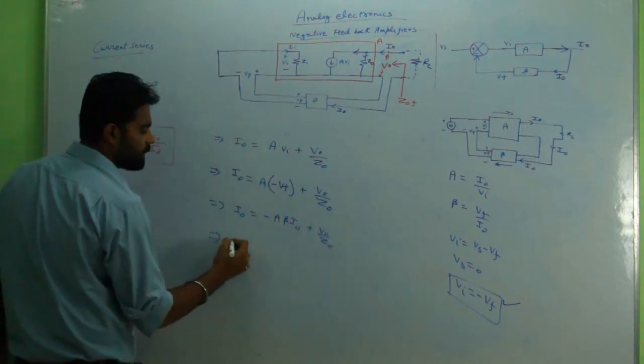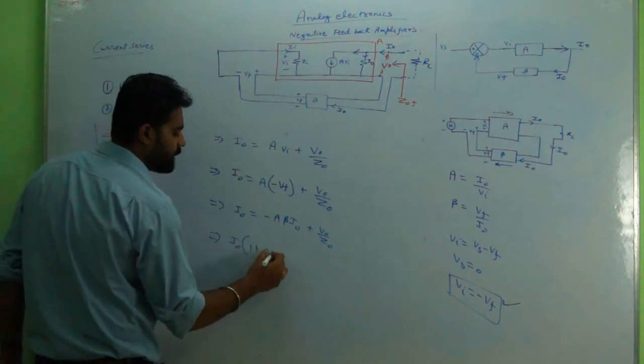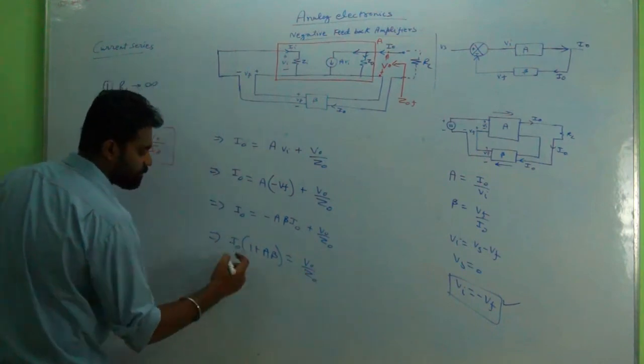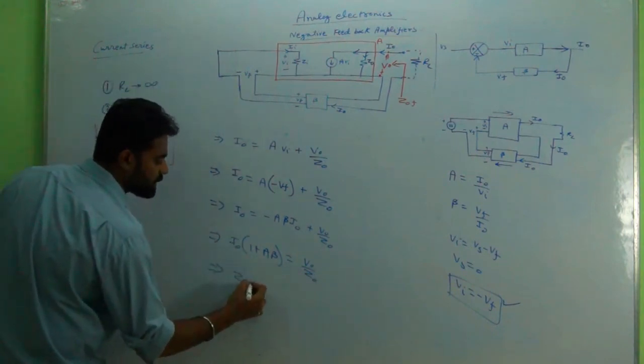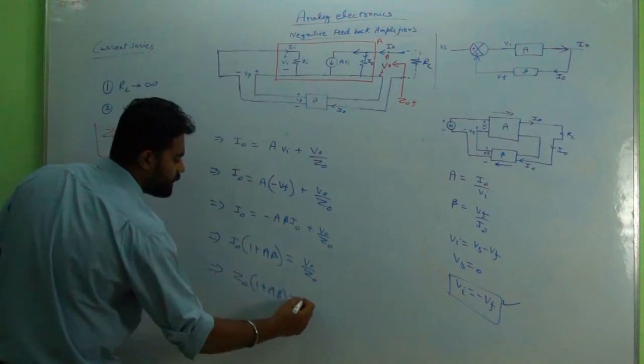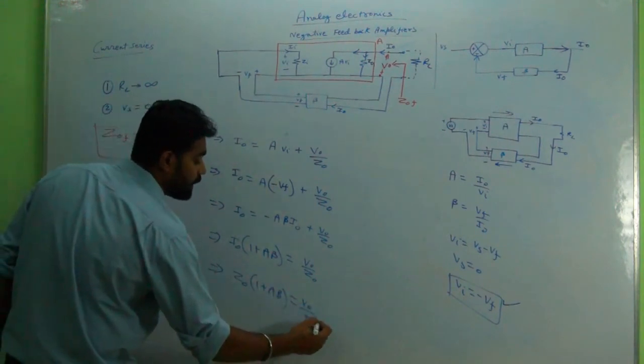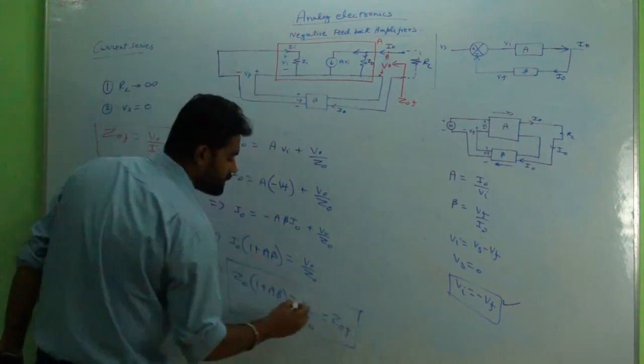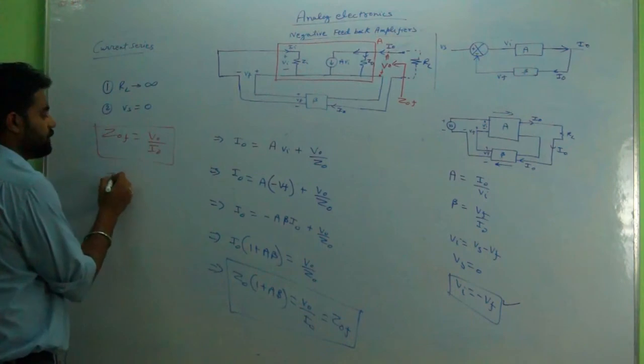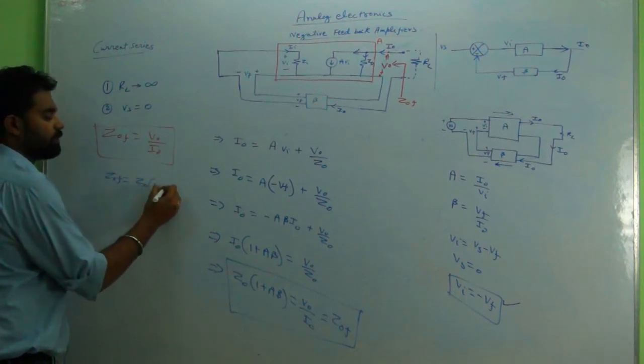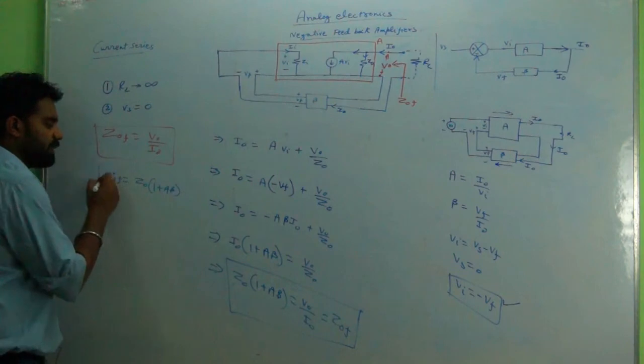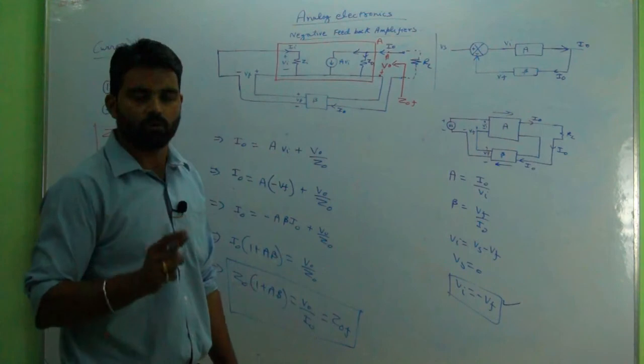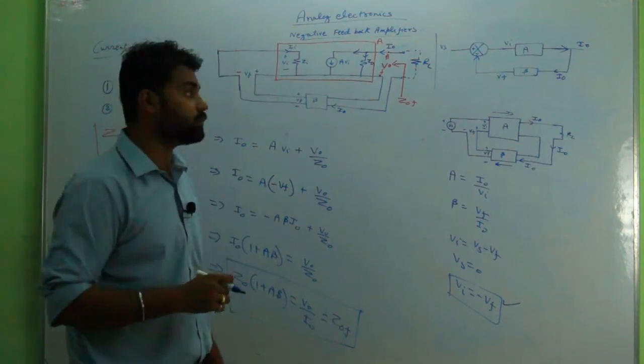It can be written as i_naught (1 plus A beta) equals v_naught upon Z_naught. Similarly, if it is carried out, Z_naught (1 plus A beta) is v_naught upon i_naught, and that is equal to Z_of. That is what is required: Z_of equals Z_naught into (1 plus A beta). That means the output impedance is increasing with current series feedback.